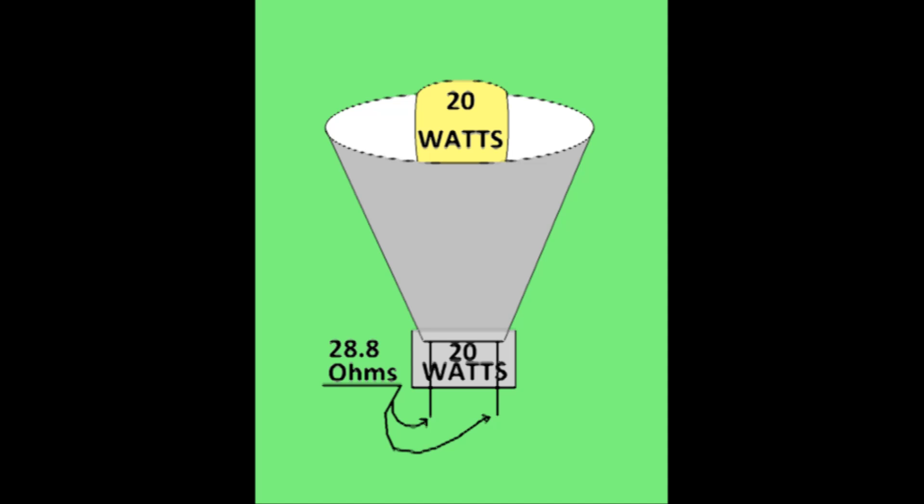Many times their wattage is marked, but you're left to guess at the voltage. Problems arise when you plug a 24 volt bulb into a 120 volt socket. Instant poof and your bulb is toast.